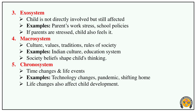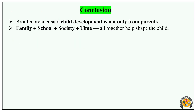Macrosystem refers to culture, values, traditions, and society's rules. Chronosystem refers to time changes and life events — for example, technology change, pandemics, or shifting home. These life changes can affect the child's development. So across all these environments — micro, meso, exo, macro, and chronosystem — the child's development is shaped.